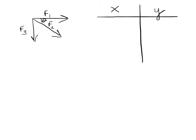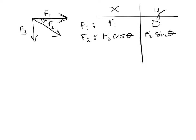Make your X-Y chart. F1's x component is just F1, and its y component is zero because it's purely horizontal. F2 is trickier — we know its force and its angle, so we split it: F2 cosine theta for x, and F2 sine theta for y. F3: its x component is zero, and its y component is F3.